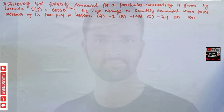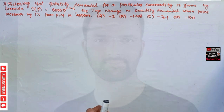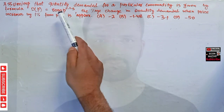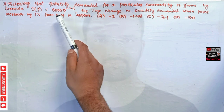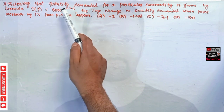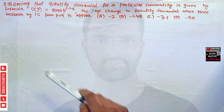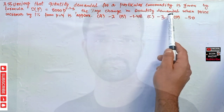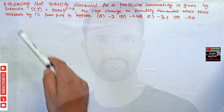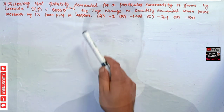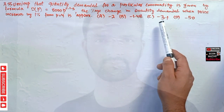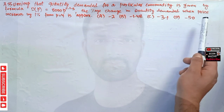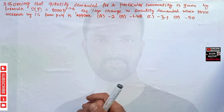Hi, this is Halal. In this video on the mathematical economics series, we will try to solve a problem on price elasticity of demand. It is a typical question. The question is: assuming that quantity demanded for a particular commodity is given by the formula D(p) = 8000 * p^(-1.5), find the percent change in quantity demanded when price increases by one percent from p = 4. The options are: negative 2, negative 1.48, negative 3.1, or negative 5.0.